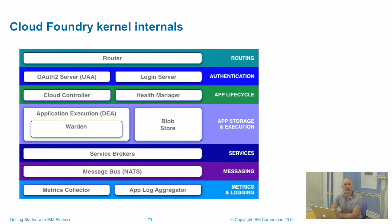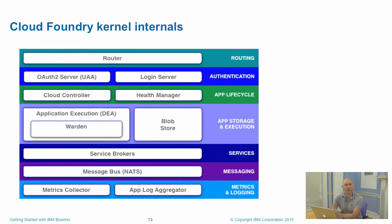Next, we have authentication. There's an authentication layer to make sure that you can log in to your cloud services. And then within the app lifecycle, we've got two key components. The cloud controller is what does all the work on the Cloud Foundry platform. So when you use the CF command line tool, you're really talking to the cloud controller — telling it to create applications, create new instances, delete instances, and bind services.